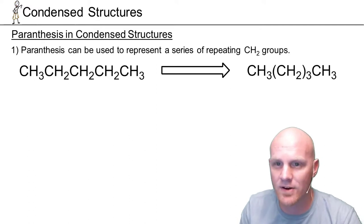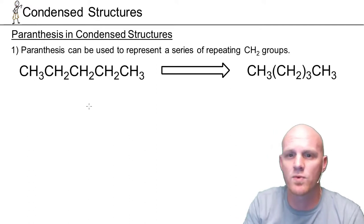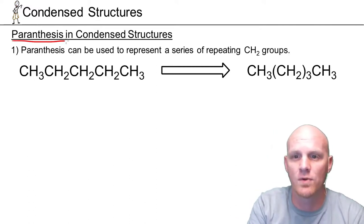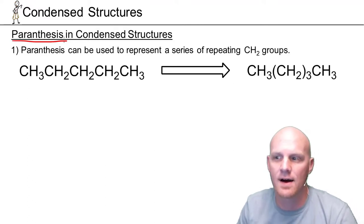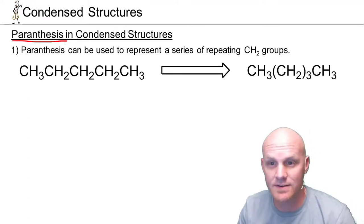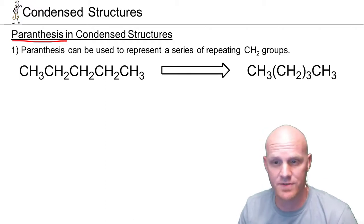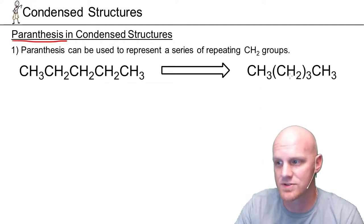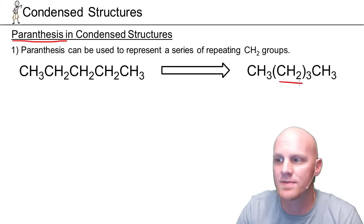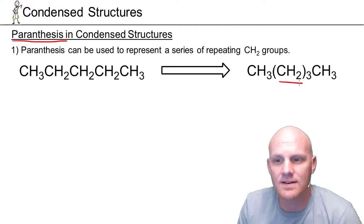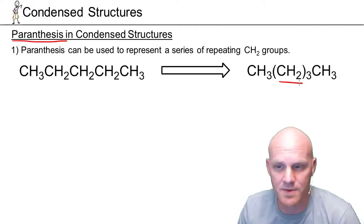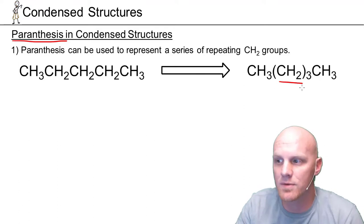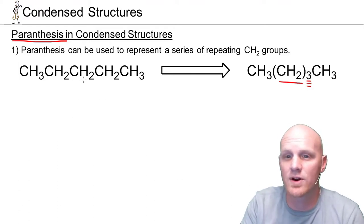The first confusing thing about condensed structures is we use parentheses in a multitude of ways — actually really three different ways. We don't often explicitly explain how those different ways work, so students don't realize that parentheses can mean different things. First, parentheses can be used to represent repeating CH2 groups. When you see CH2s in parentheses, you typically can't terminate in a CH2 normally, so the number in parentheses tells you how many there are in a row — in this case, three in a row.